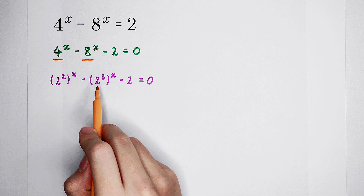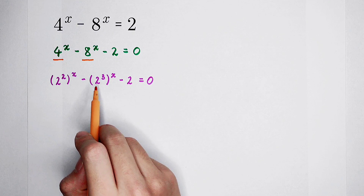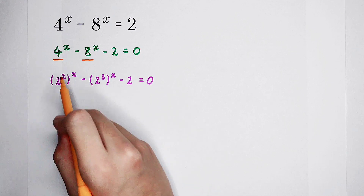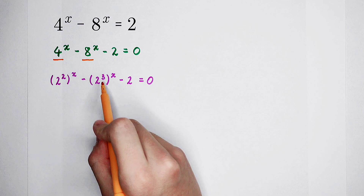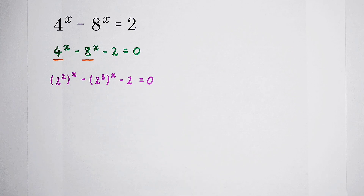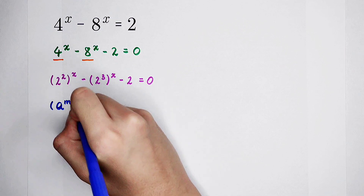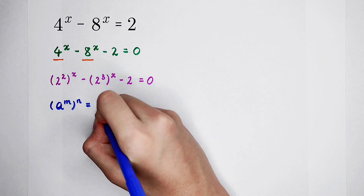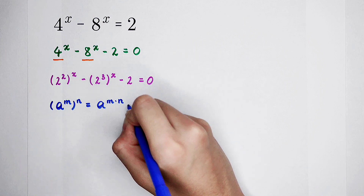The exponents are still x. Our problem is that the exponents in the bases are different — here is 2, here is 3. So for dealing with this problem, we have to use a formula: a to the power of m, all to the power of n, equals a to the power of m times n.